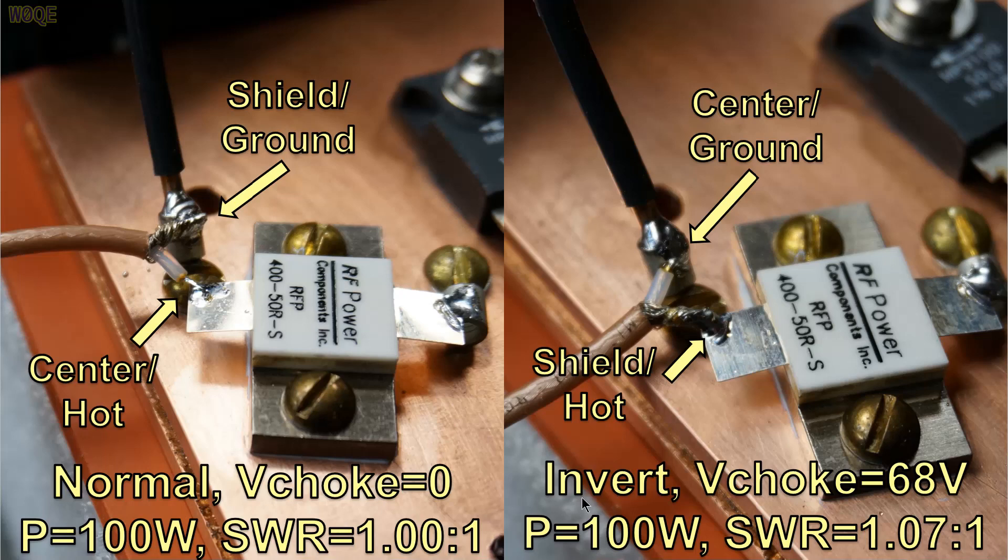This picture shows what I call the inverting mode where these two leads were swapped. The center conductor now comes in and goes to the chassis connection. The shield goes to the hot side of the resistor and the common mode choke voltage is 68 volts now at 100 watts from the radio. SWR of now 1.07 to 1. The SWR of 1.07 to 1 is due to the fact that there is some common mode current that flows and that disrupts things a little bit.